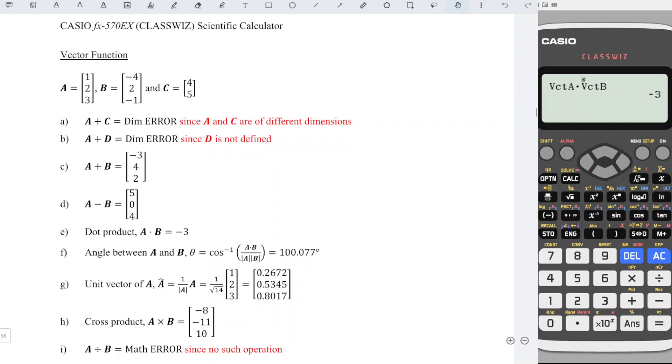Next, angle between A and B. Press Option, down, angle number 3, Option, vector A, Shift, close bracket to get comma, Option, vector B, and press equal. We should obtain the correct angle.